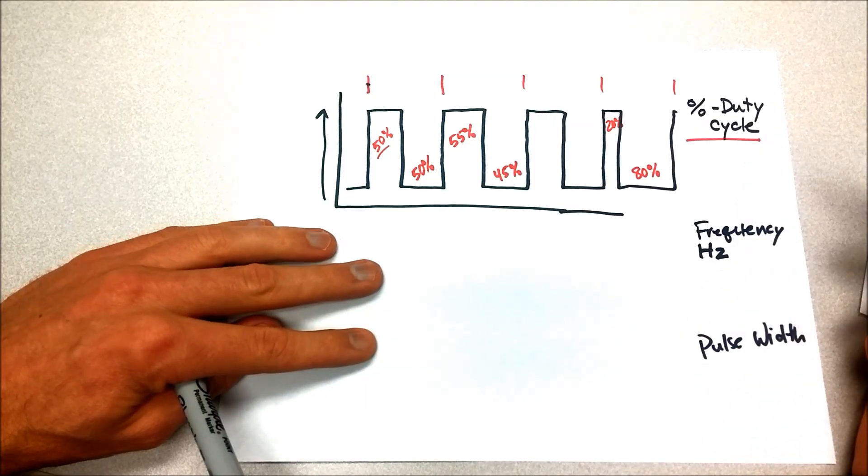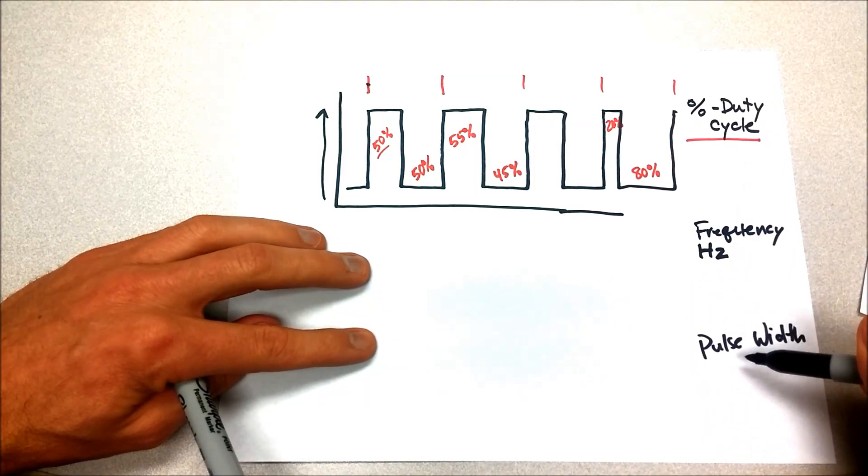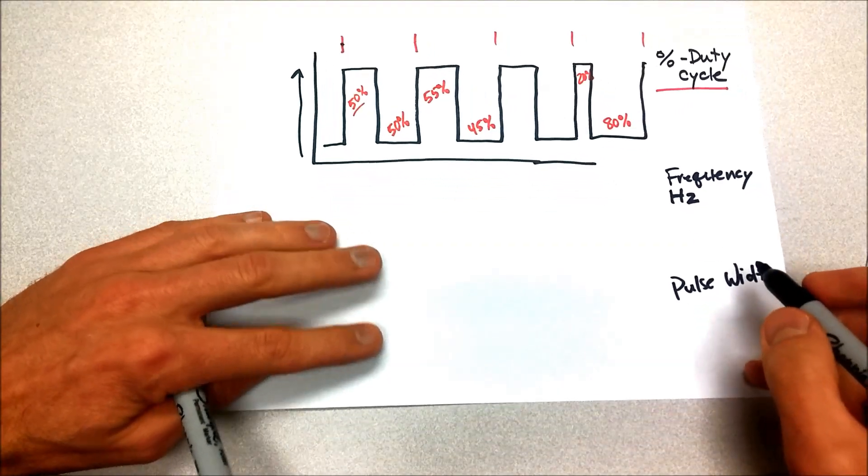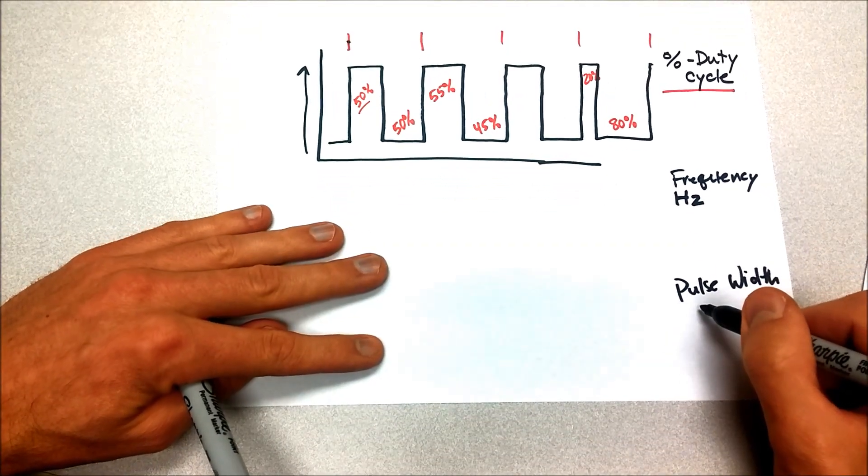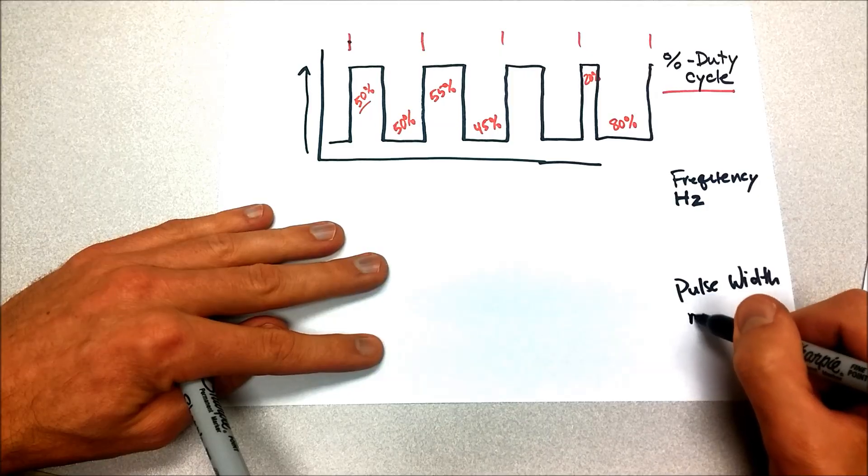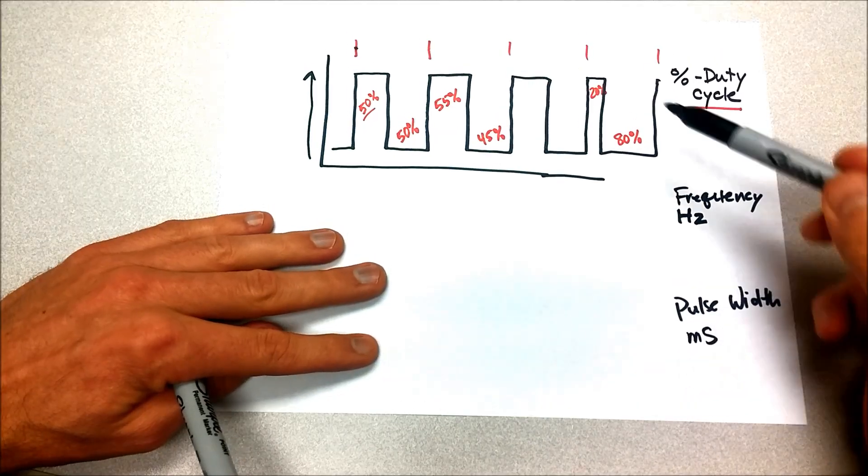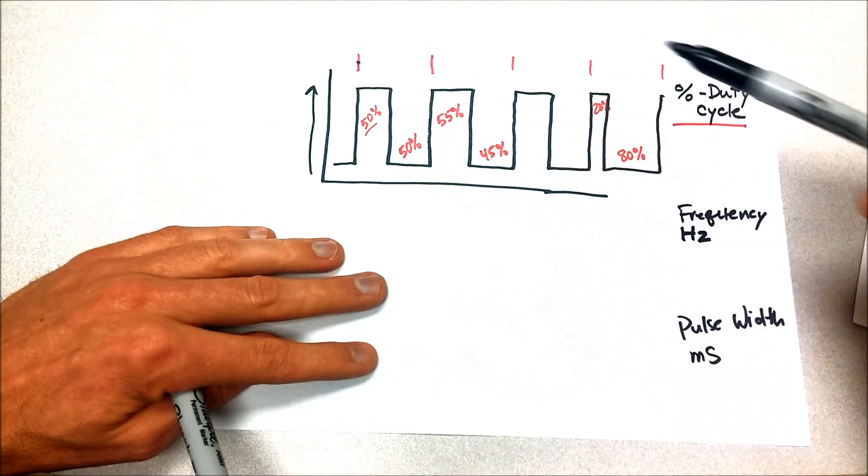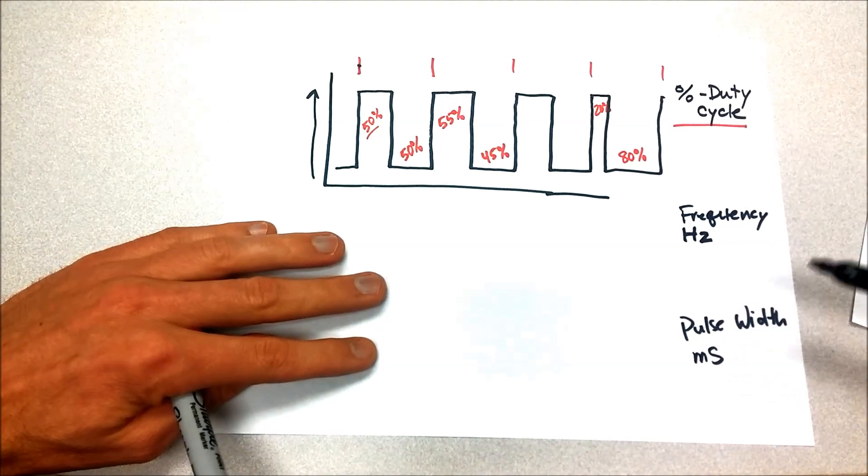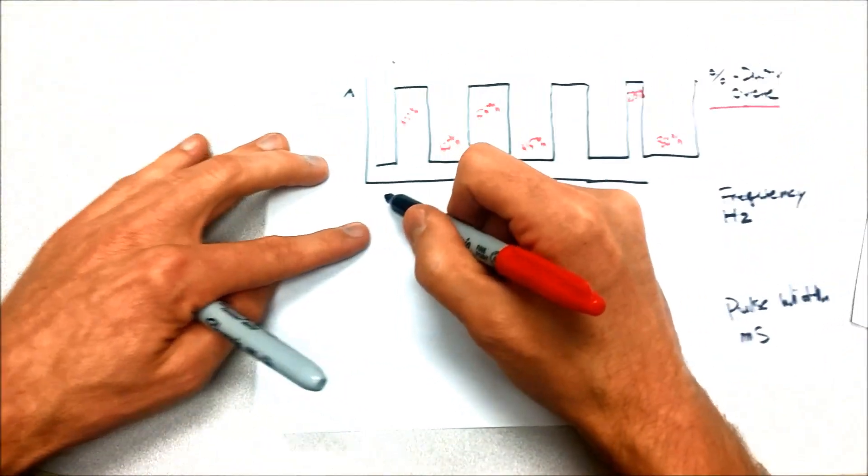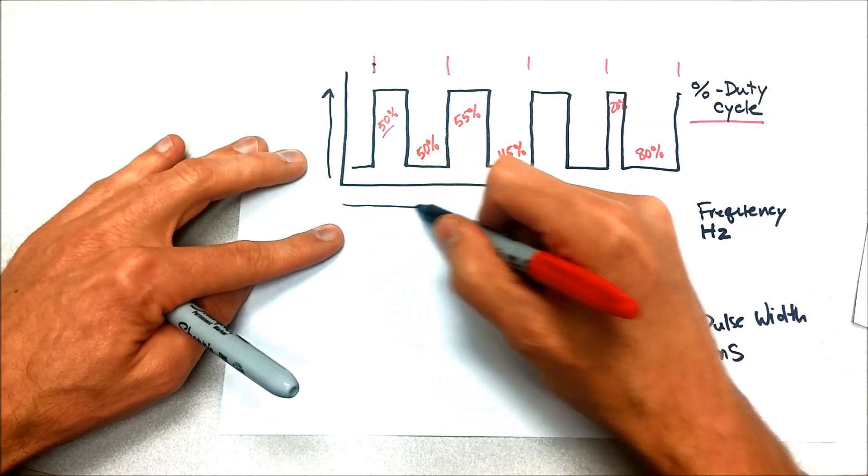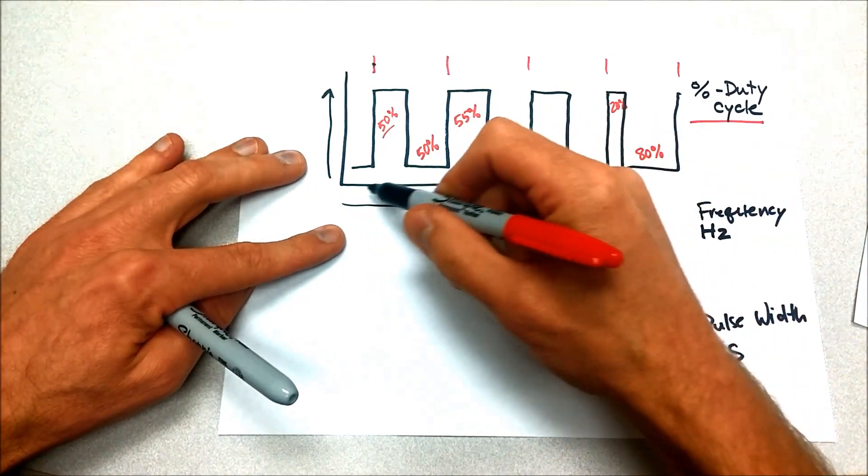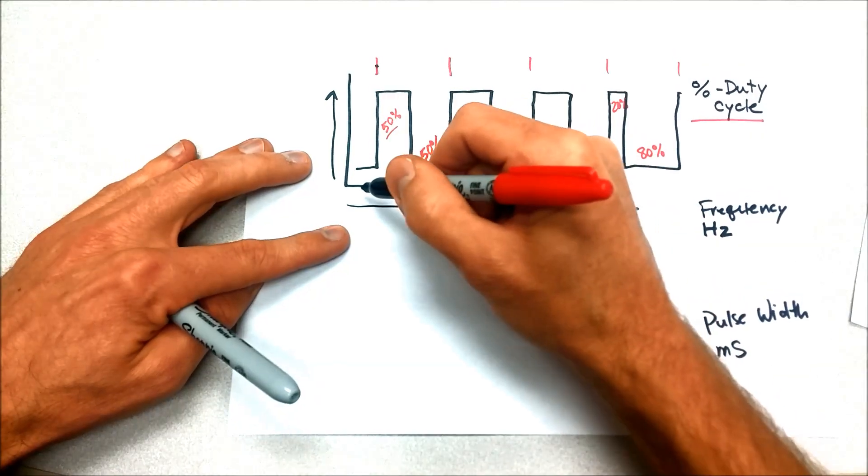Duty cycle is measured in percentage of on time. And finally, pulse width is measured in actual time, usually in milliseconds. We're talking about a computer that's turning these things off and on, so it's usually quick, but it just is in time. So, of course, on a lab scope, our base across the bottom of the domain that we're measuring in is always time.